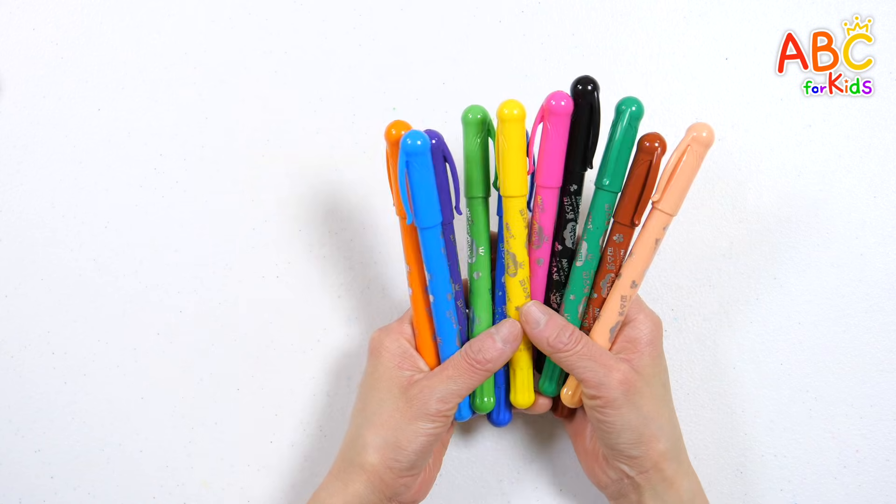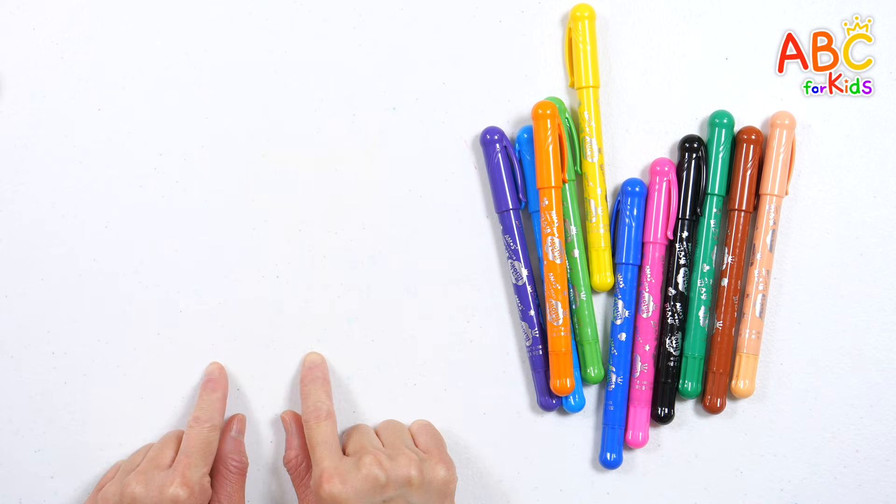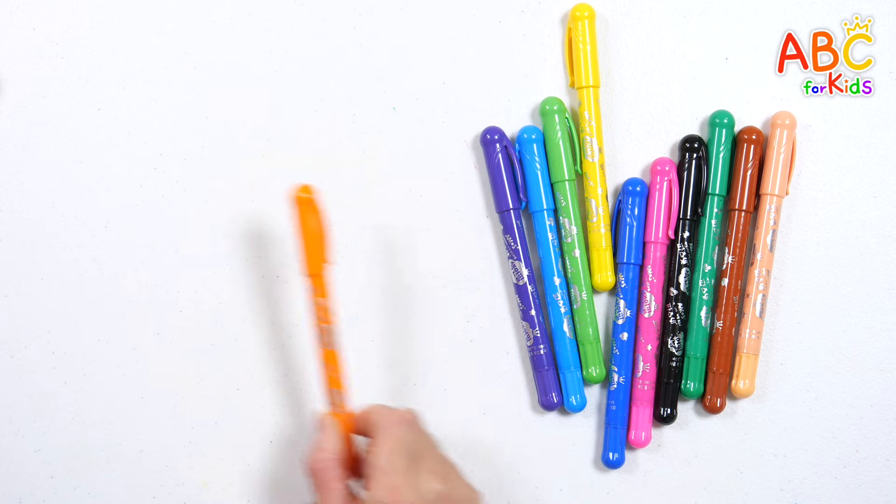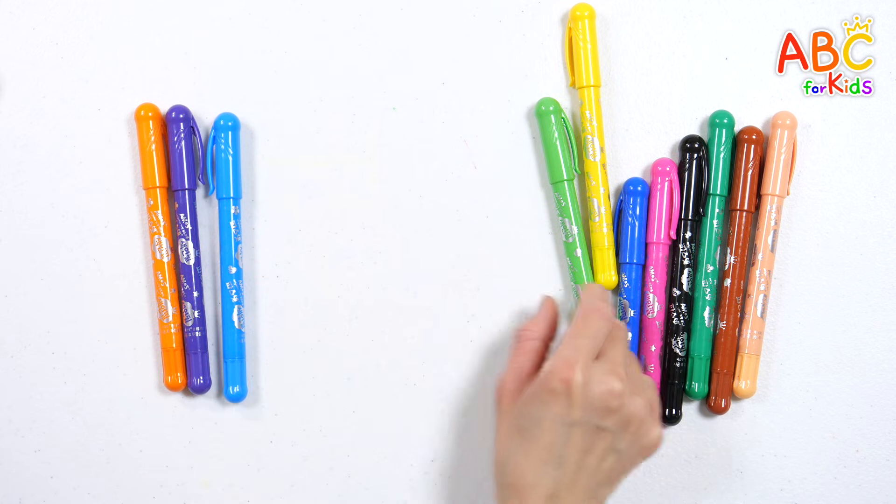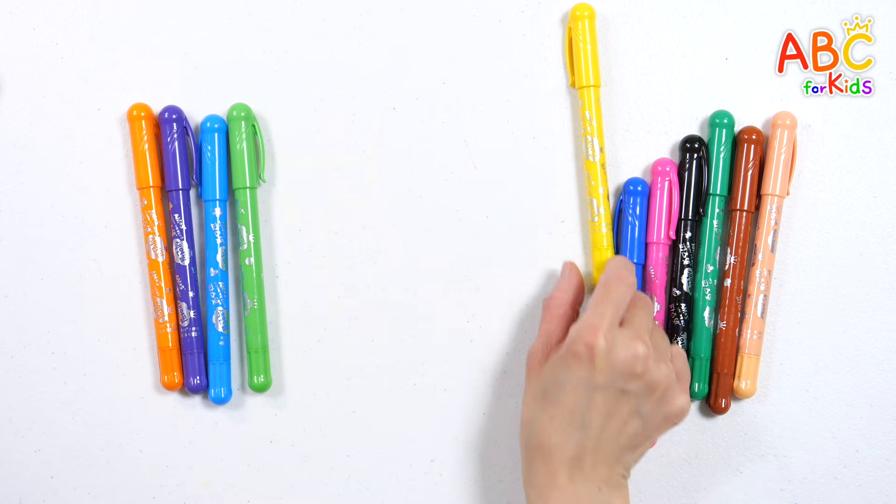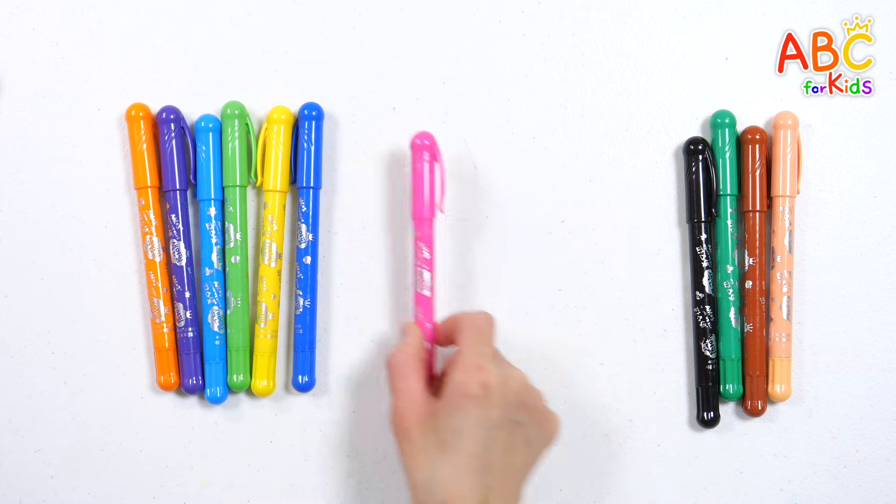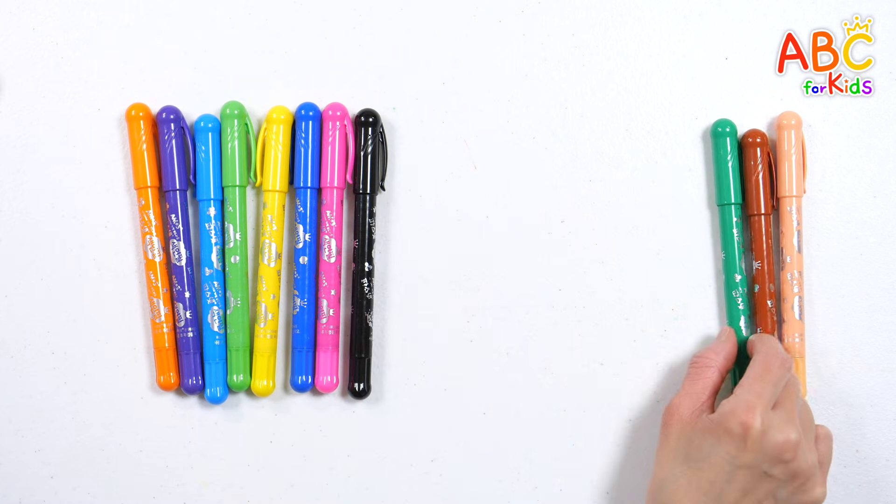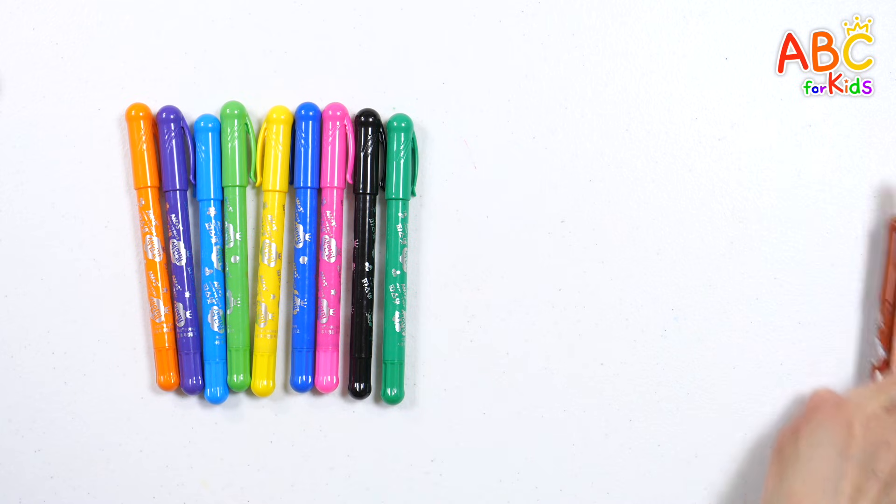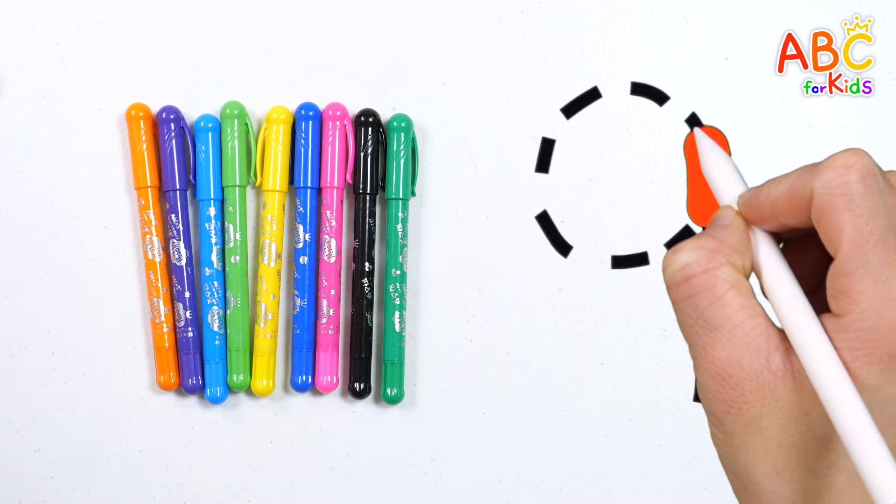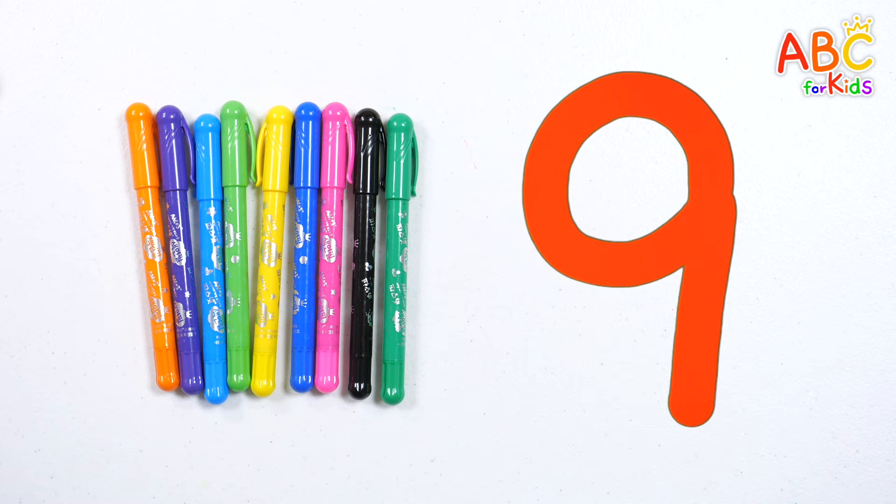I brought lots of colorful pencils. Let's place nine pencils on the left and count them together. One, two, three, four, five, six, seven, eight, nine. Nine pencils! Wow! Now let's write the number nine on the right side. Nine! Good job!